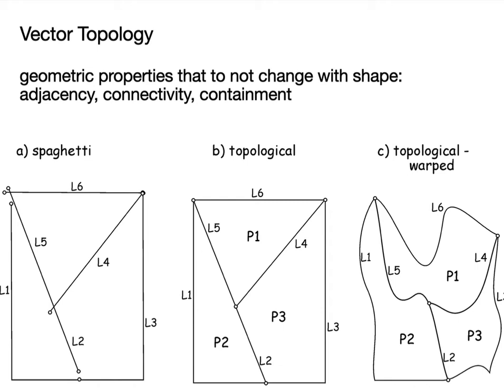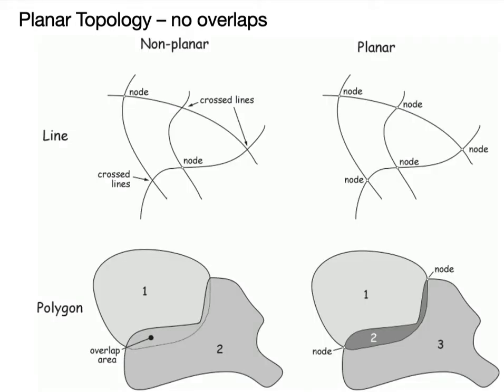You might wonder why we would ever warp the data. We do it quite often through something called projections, which we'll talk about in a future video. But even if we don't ever warp our data, if it's not topologically correct, we might get incorrect answers. Our topology is almost always planar — meaning data can't lay above other data. You can't have one line occupying the same space as another line without intersecting it.